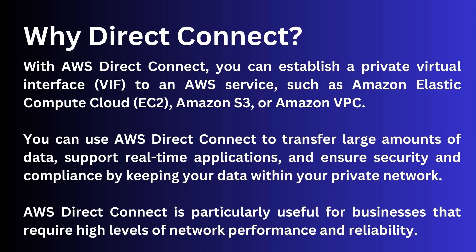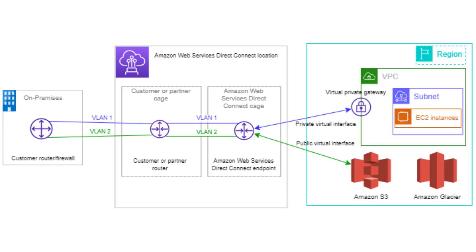Let's look at some of the points as to why we require AWS Direct Connect. With AWS Direct Connect, you can establish a private virtual interface to an AWS service such as Amazon EC2, Amazon S3, or Amazon VPC. You can use AWS Direct Connect to transfer large amounts of data, support real-time applications, and ensure security and compliance by keeping your data within your private network. Direct Connect is particularly useful for businesses that require high levels of network performance and reliability, such as those in financial services, healthcare, and media and entertainment industries.